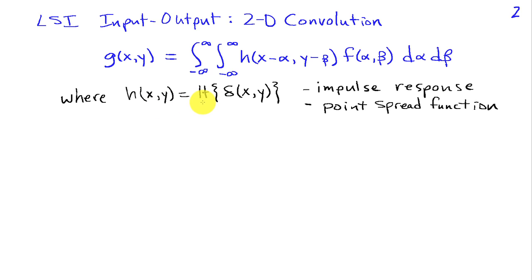In other words, it's what you obtain at the output in response to an impulse located at the origin as an input. This impulse response is also known as a point spread function. The meaning of the term point spread function is pretty intuitive. If I have a point as an input or the impulse over here, then what comes out is how that impulse gets spread by the system.